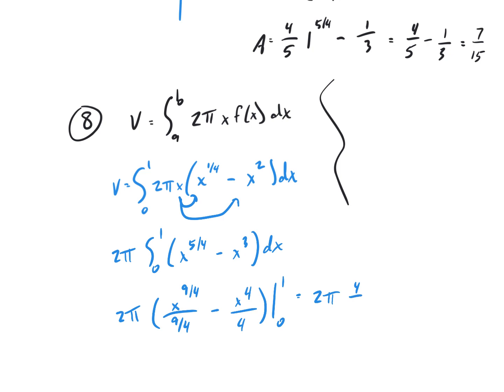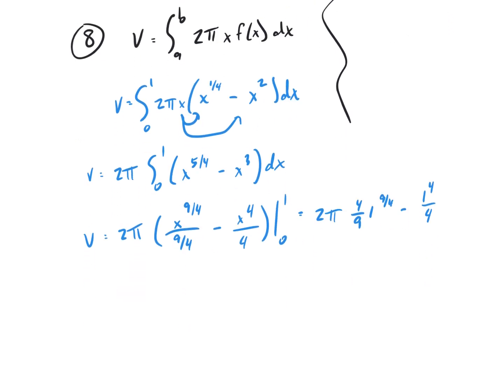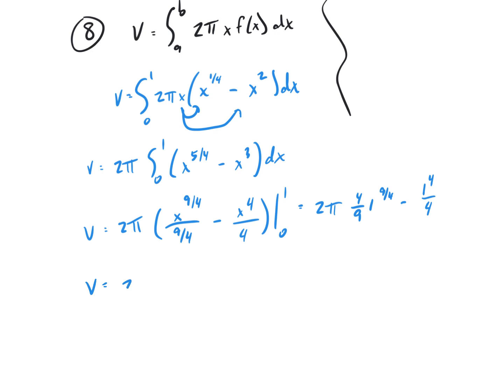Almost done here. 2 pi, 9 4ths flips up, 4 over 9, and then 1 to the 9 4ths, which is going to stay a 1, minus 1 to the 4th over 4. Let's clean it up. So, finally, v equals 2 pi times 4 over 9, times 1, minus 1 over 4. And then typing all that into my calculator, not the pi, though. I'm leaving that off. You get 7 pi over 18. I didn't type the pi in. So I did 4 9ths minus 1 quarter, found out what that equals, multiplied it by 2. 7 over 18, tacked the pi back on. That's the end of the review.